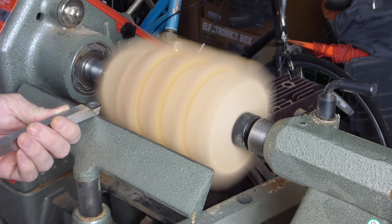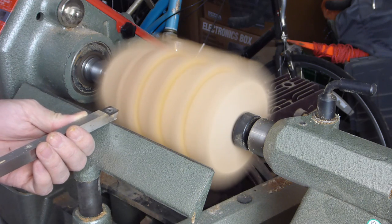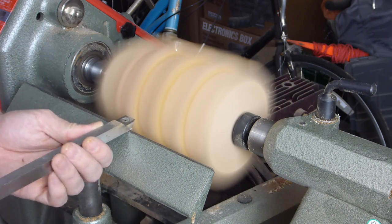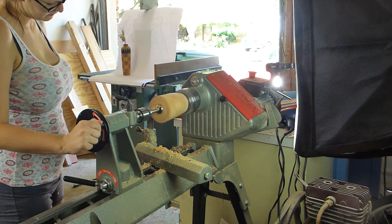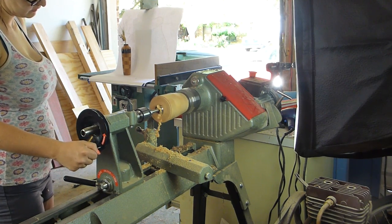So I roughed each half out between centers. Then I put each half on a chuck and hollowed out the center with a forstner bit. And my wife helped with this.